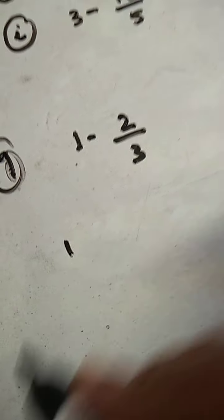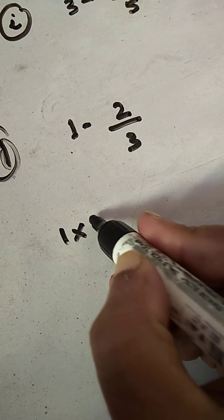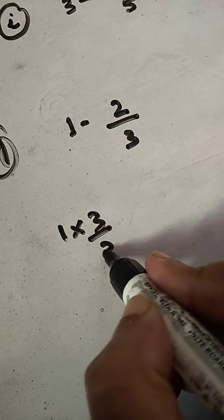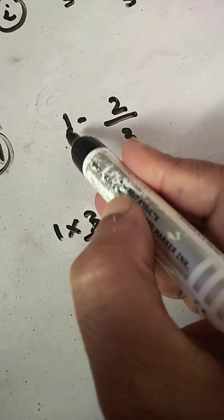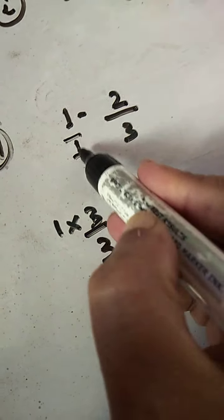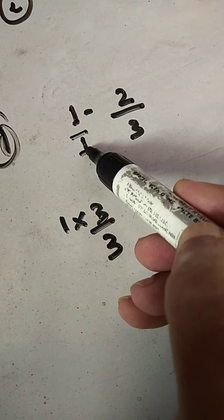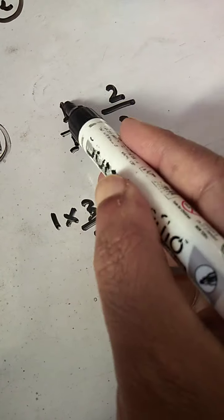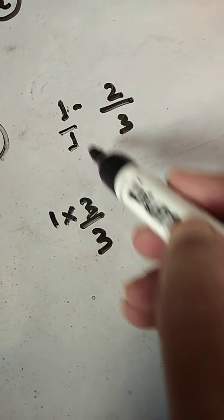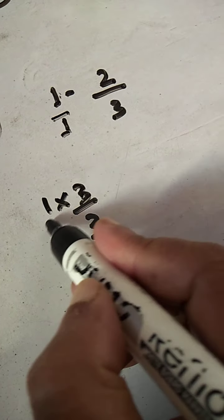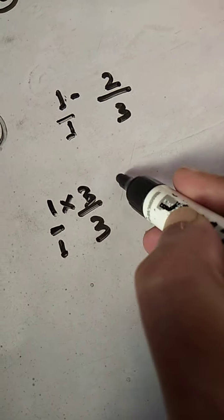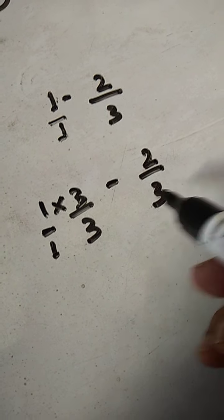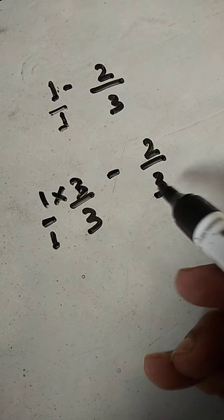I have to multiply this 1 with 3 by 3, that is with the numerator also, because 1 is carrying 1 as a denominator also. 1 is numerator and 1 as denominator also. So, this whole numerator and the denominator will be multiplied with 3 and 3. That is 2 by 3. Why we are doing this? To make the denominator same.